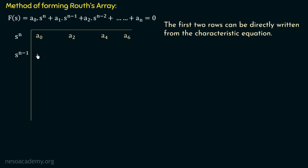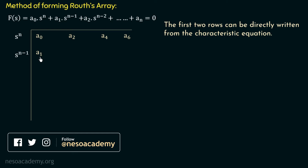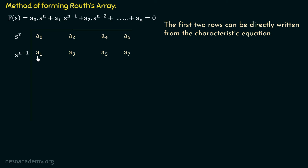What remains are the coefficients of odd powers of s. In the second row, we place a₁ (the coefficient of sⁿ⁻¹) first, then skip a₂ and place a₃, skip a₄ and place a₅, and so on. So the second row contains the coefficients of all odd powers of s. This will be clearer when we see examples.